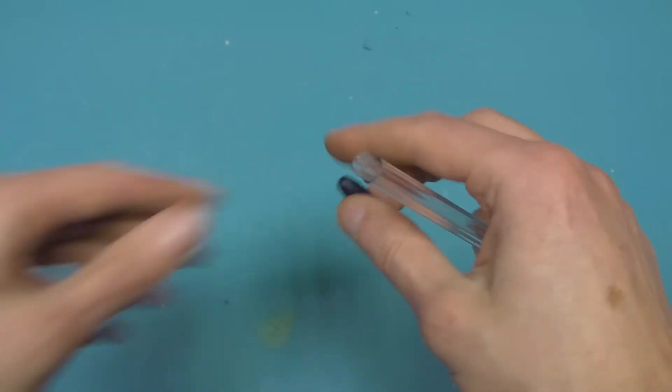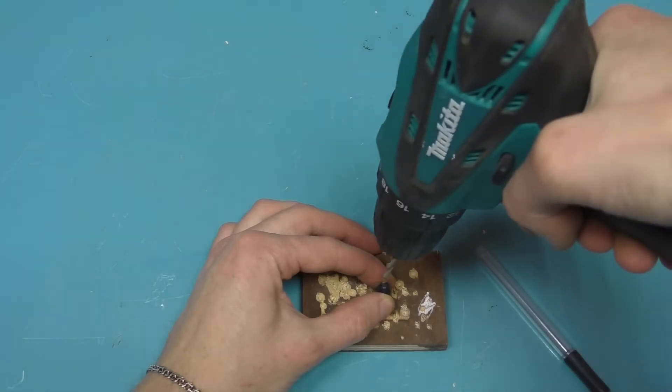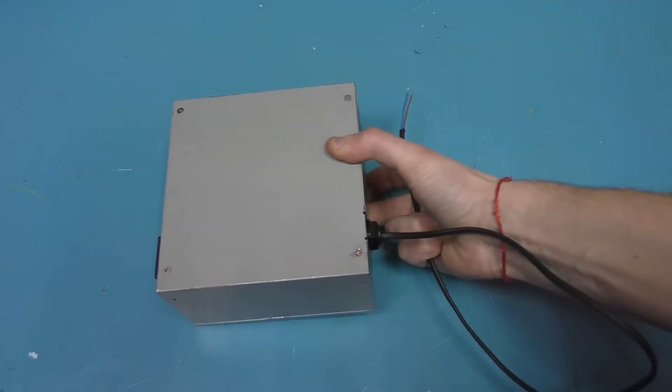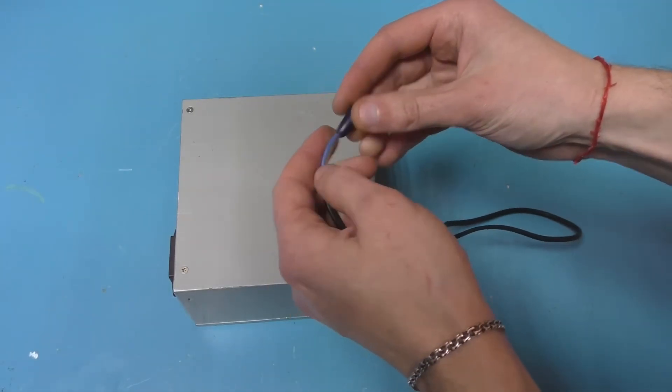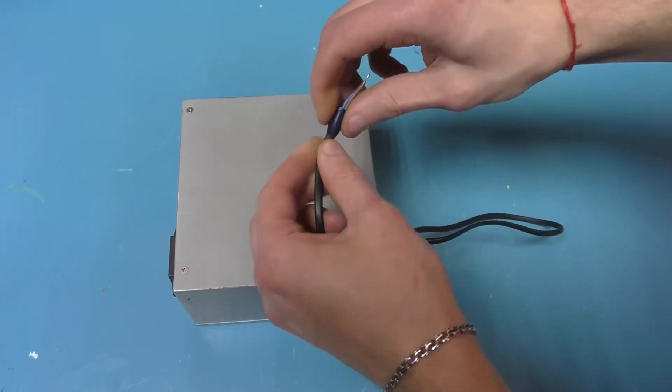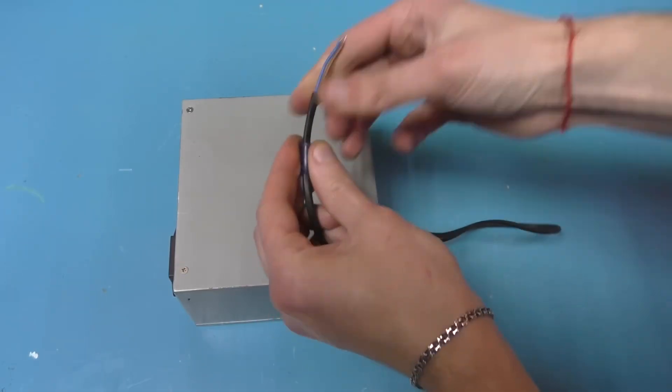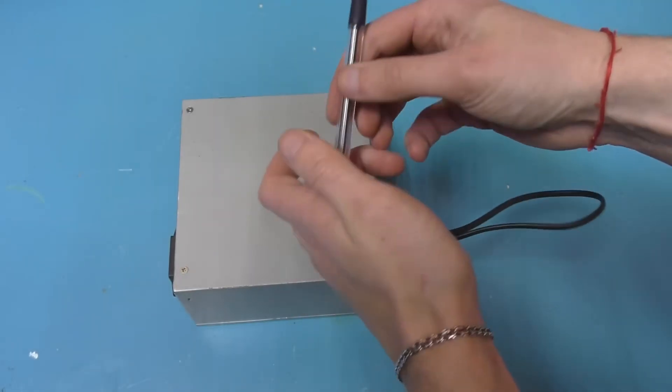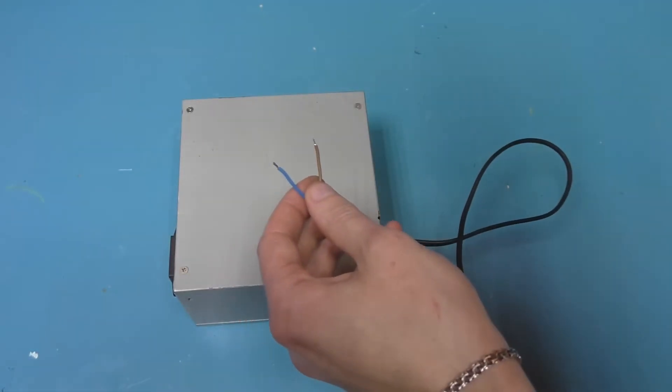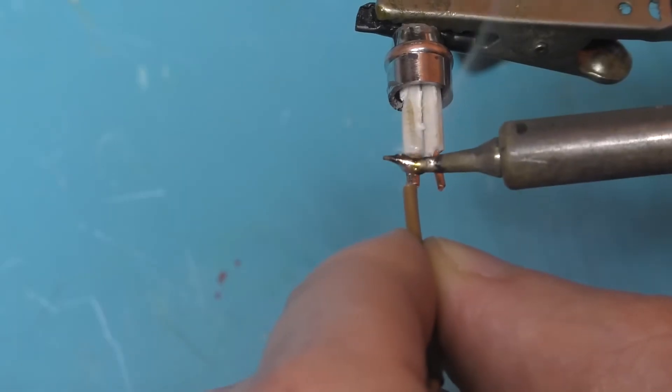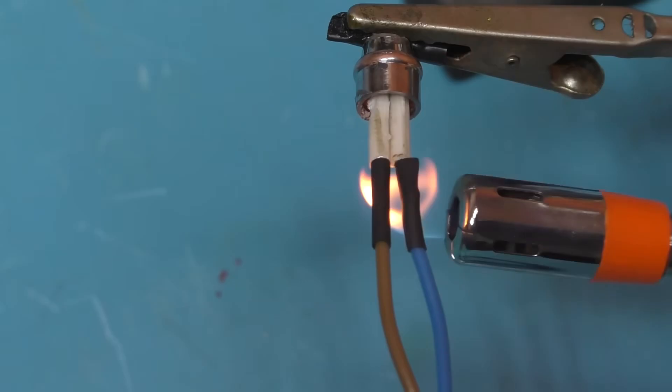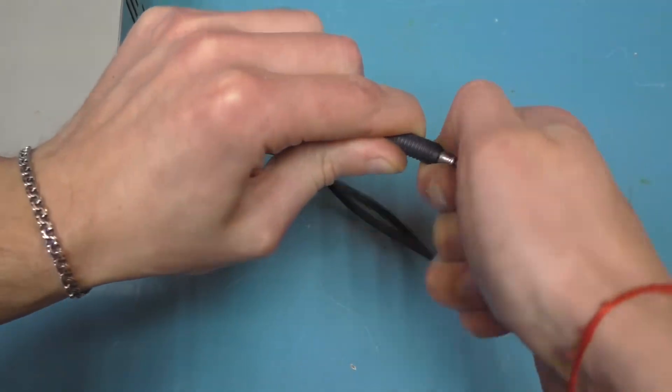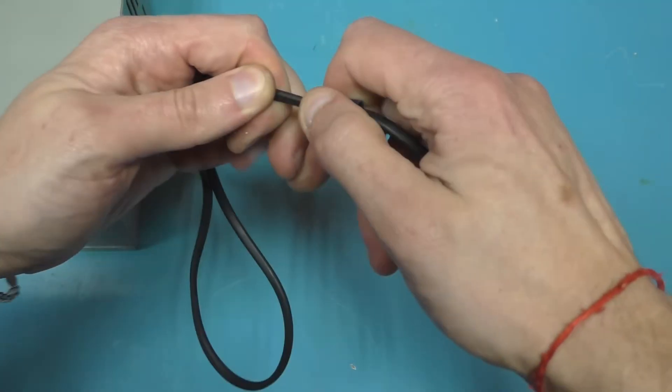You need to drill a hole in the lower part of the pen. Now we take the previously made device with the wire, put on the lower part from the pen, then the pen itself and solder the upper part.